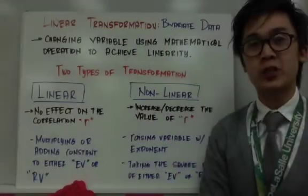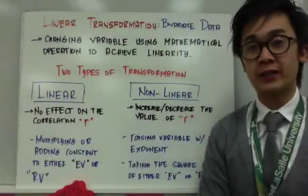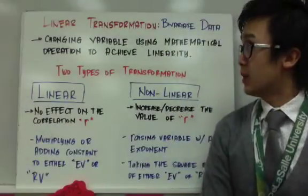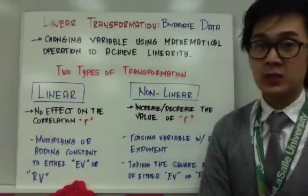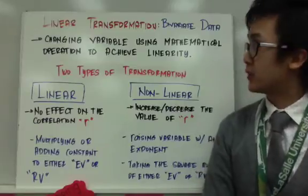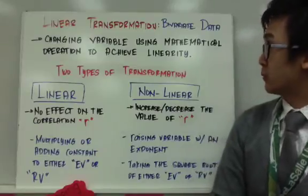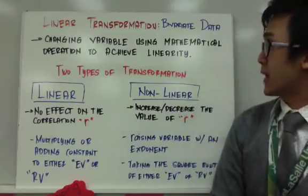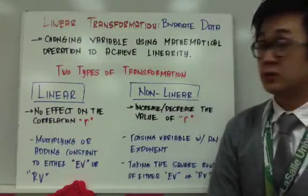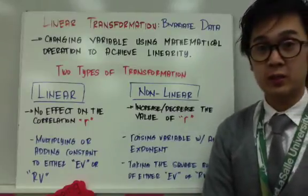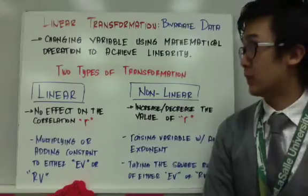Linear transformation on a bivariate dataset. By definition, a linear transformation is changing a variable using a mathematical operation to achieve linearity.